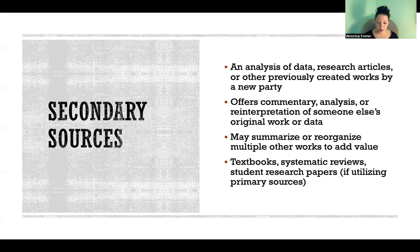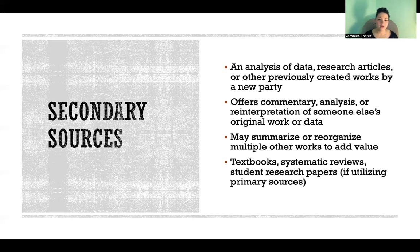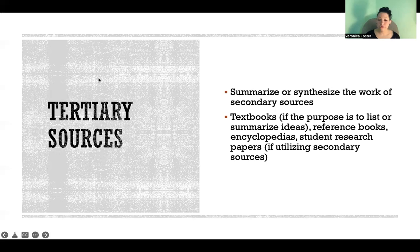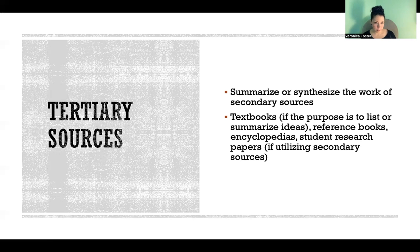Secondary sources also include systematic reviews, where authors are collecting and synthesizing the results from many different primary sources into one. Most student research where you're writing a paper about a topic is a secondary source if you're utilizing primary sources of information to write your paper. Student research papers can also be tertiary sources. Student research can be a tertiary source if you're drawing from secondary sources of information.